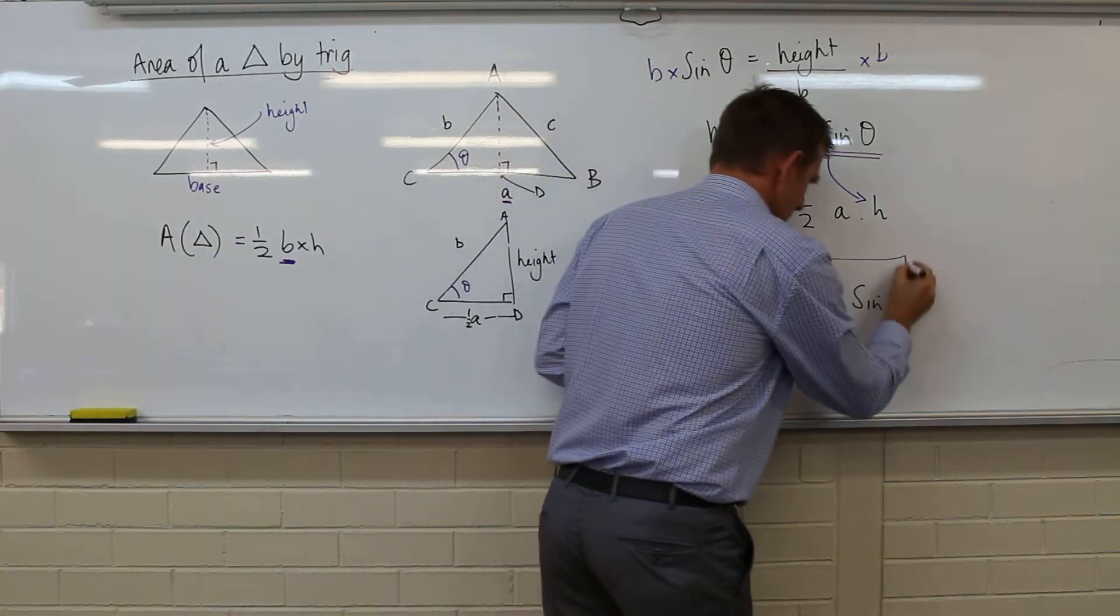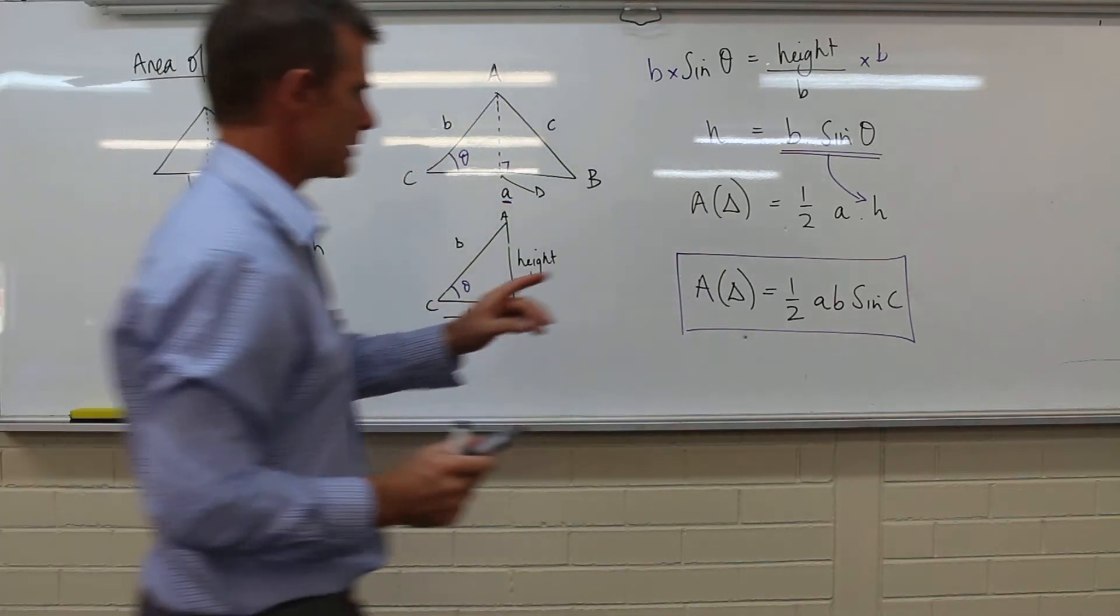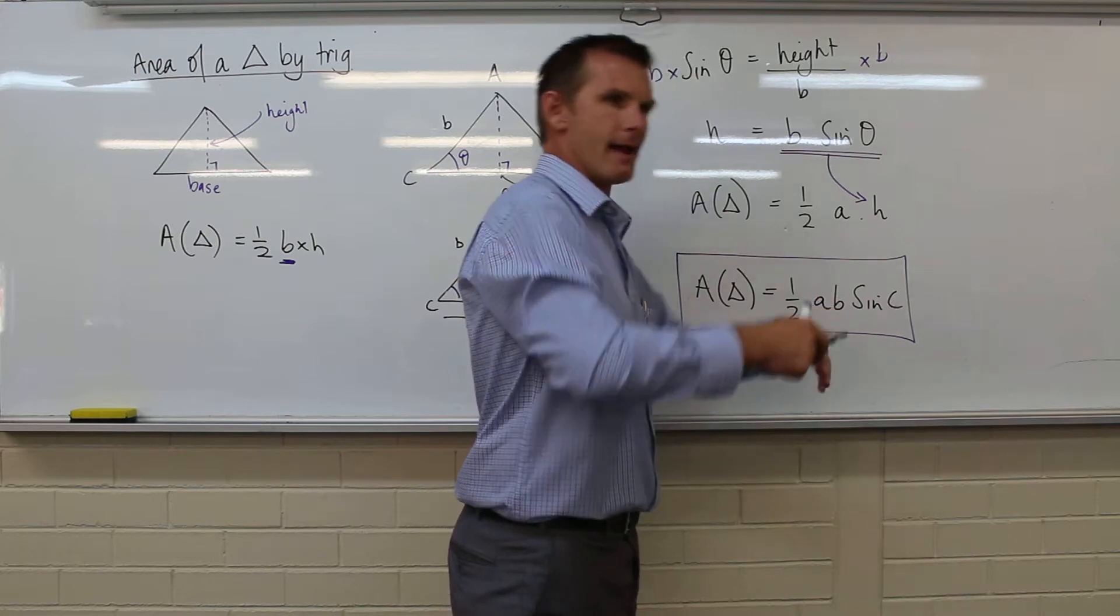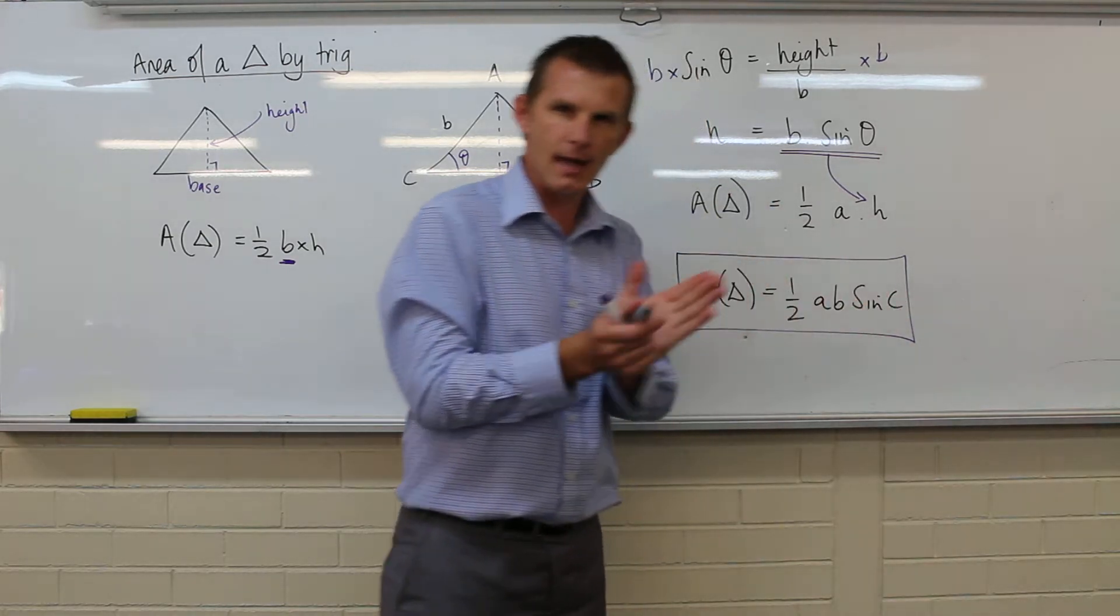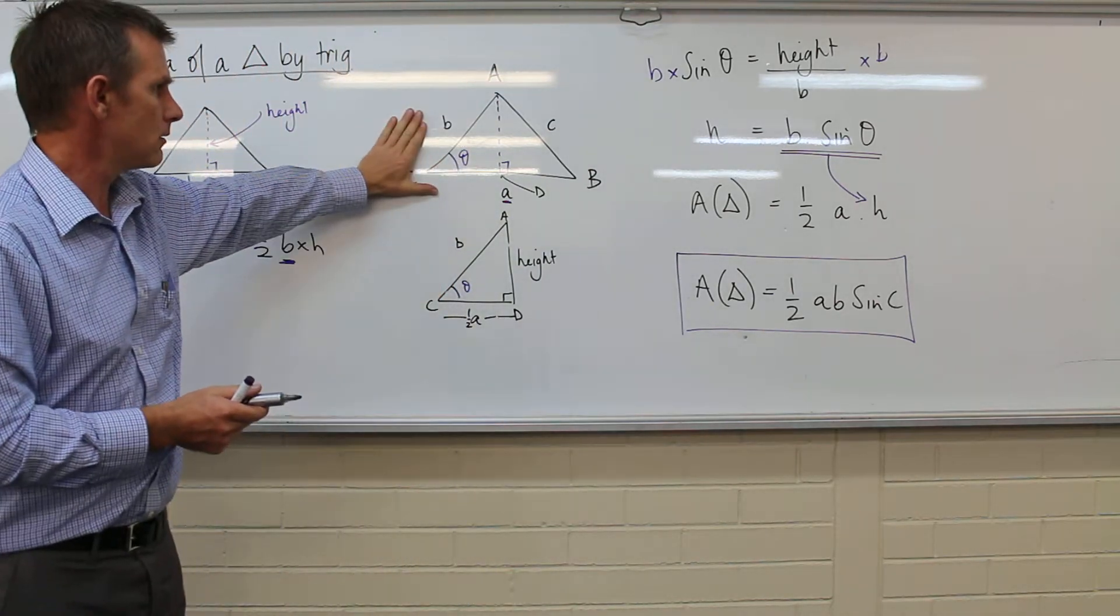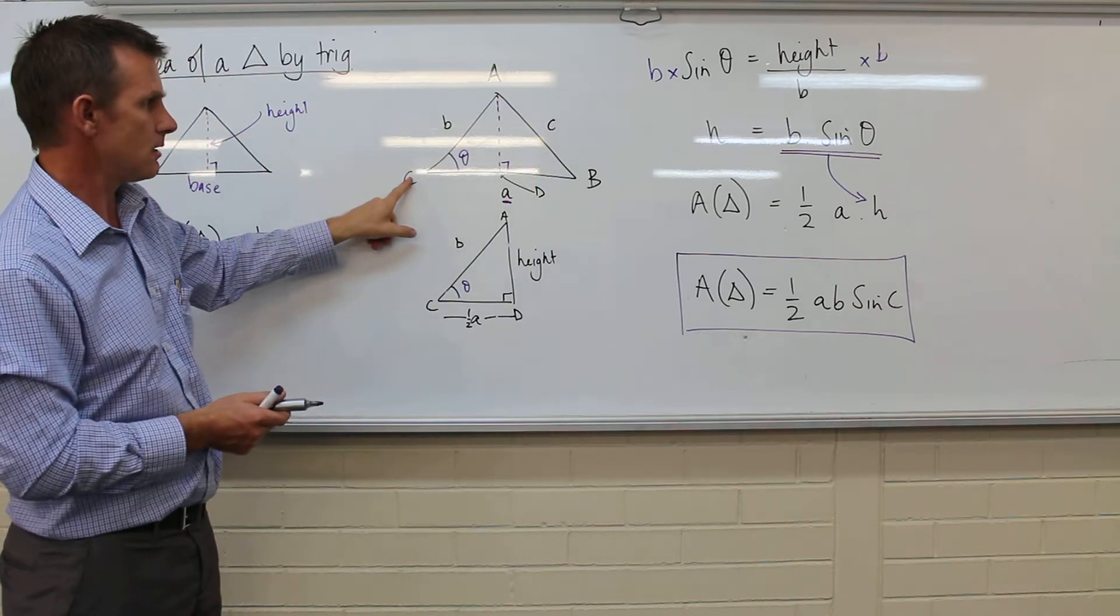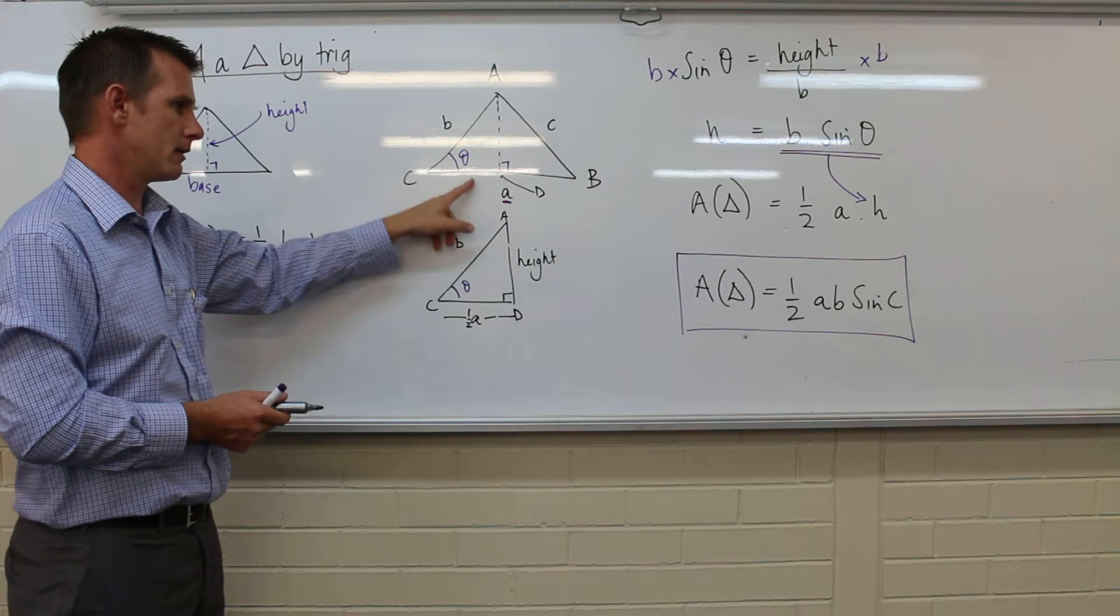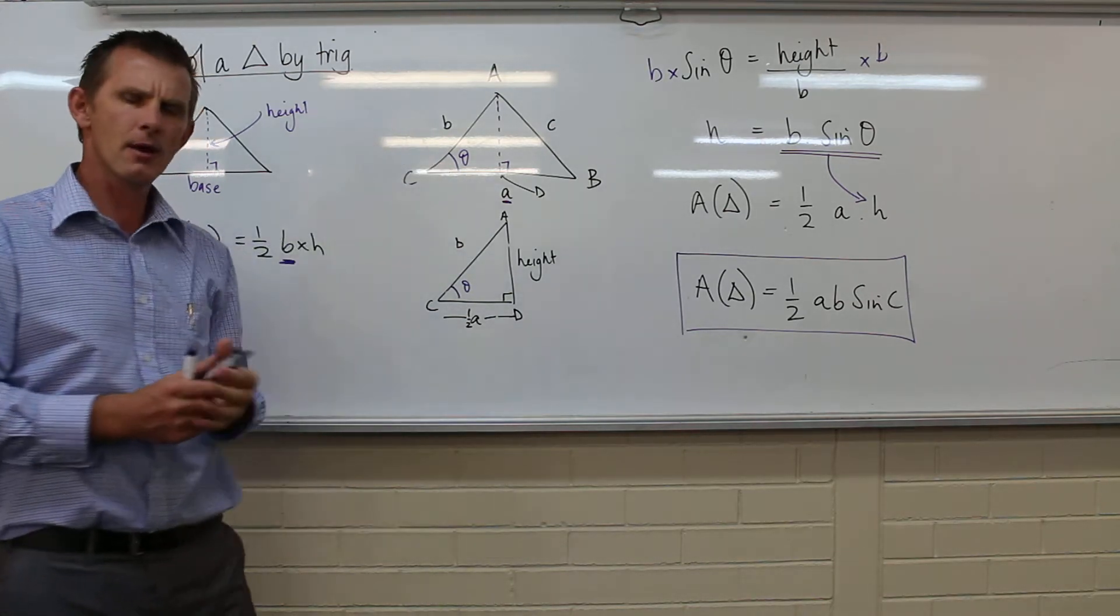And you might say, well yeah okay that's great sir, but why is that so special? Well it's special because A and B are exterior side lengths, and C is the angle between those two sides. Look back on this diagram here. Here's B, here's A, here's C. So C is the angle between those two sides that I need.